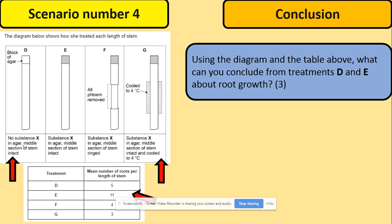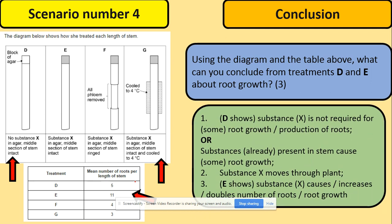The question is to use the diagram and the table. What can you conclude from treatments D and E about root growth? Looking at this table mainly here. What we can conclude here is that substance X is not actually required for the root growth, we can conclude, because we still have got five of those even though there is no substance X. Substance X will move through the plant, so we can conclude that. We don't know if that goes through the phloem or xylem yet, and E should be able to conclude that.